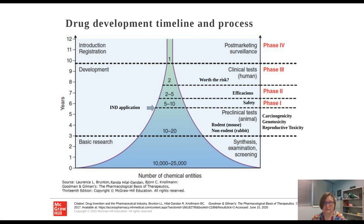If one of these drugs is found to be safe and effective in both a rodent and non-rodent model, then the investigator files an investigational new drug application. At this time, the FDA approves and determines if this can be used for clinical trials in humans. Clinical trials in humans are broken down into three phases. The first phase has a very small number of participants and is used to test for safety. Next, they look in a slightly larger group to see if it's efficacious. And finally, in large-scale studies, they look to see if it's worth the potential risks or side effects.